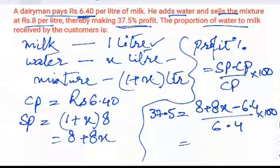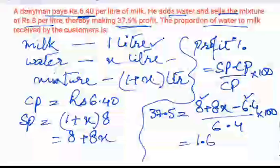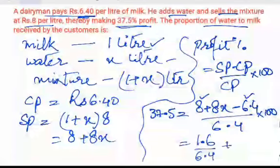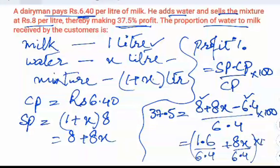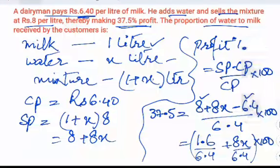Now this becomes 8 minus 6.4, it becomes 1.6 upon 6.4 is already here, plus 8x upon 6.4, and this whole into 100. What we have done is we have divided 6.4 separately to 1.6 and 8x, and this whole was multiplied by 100.